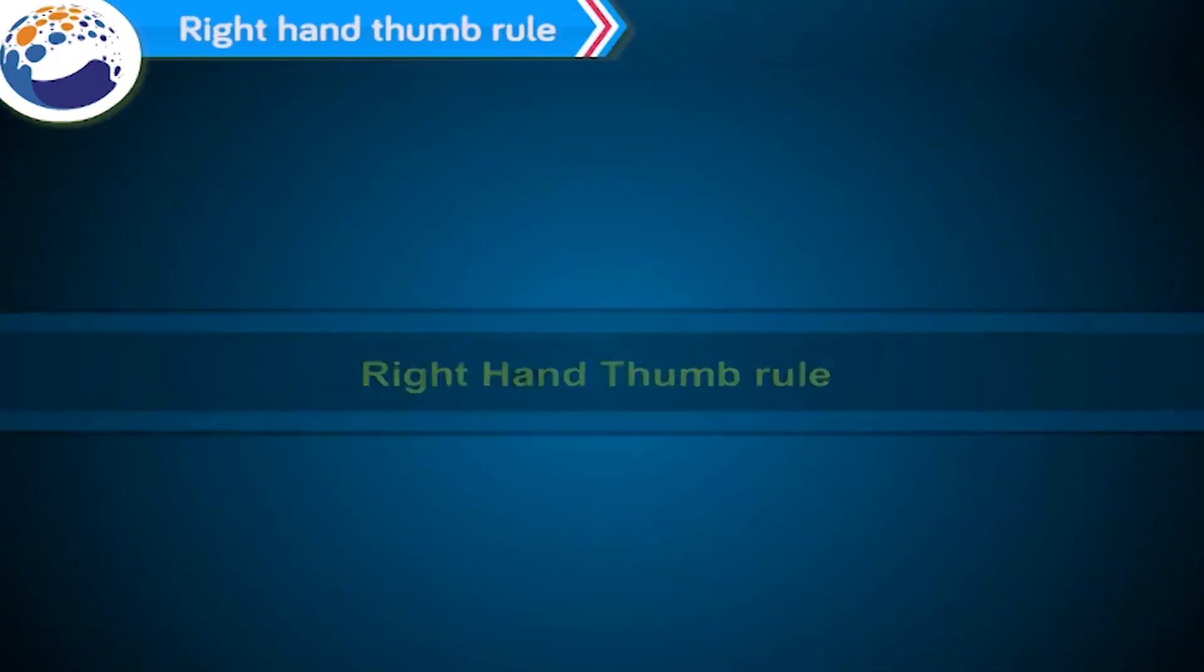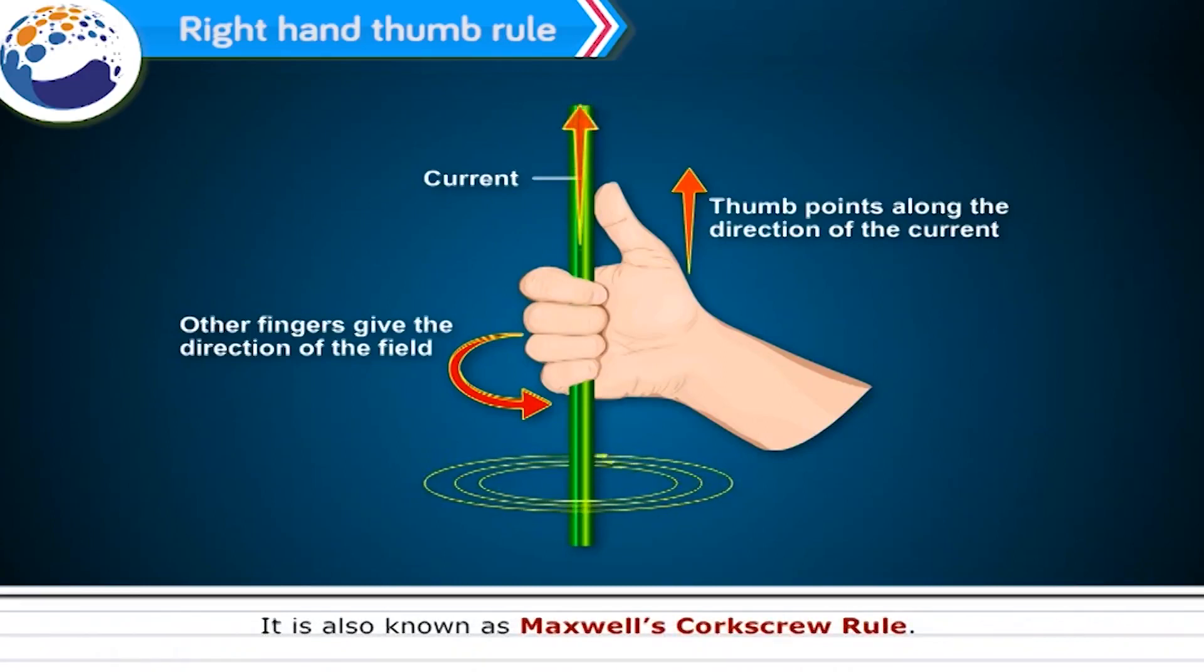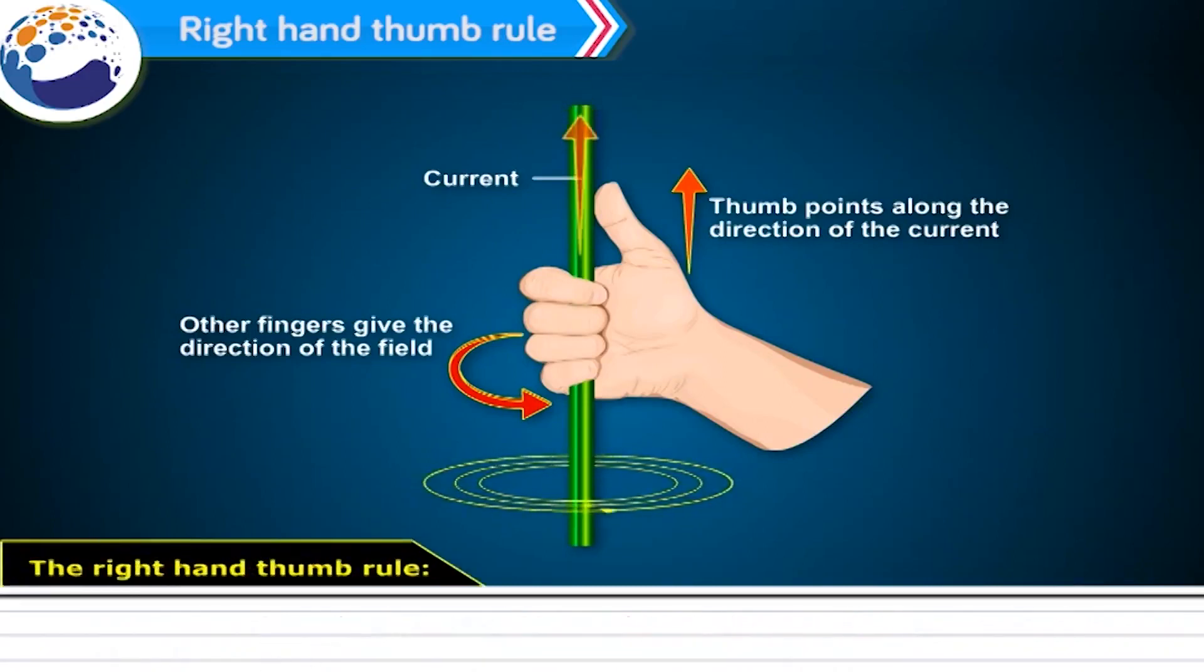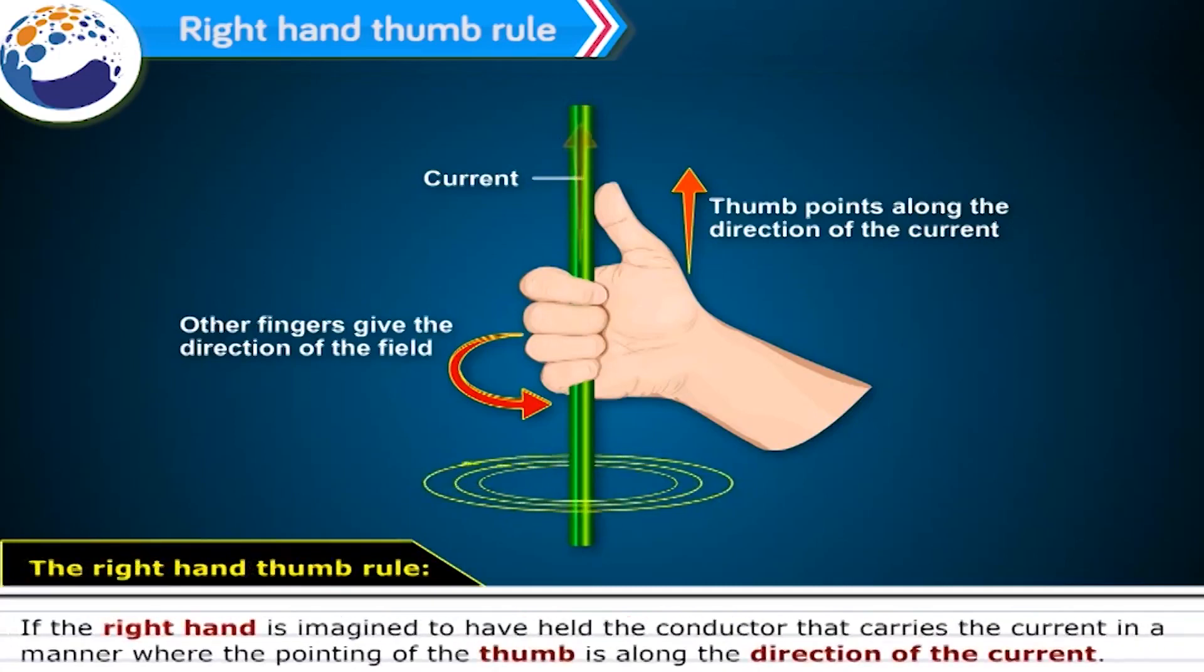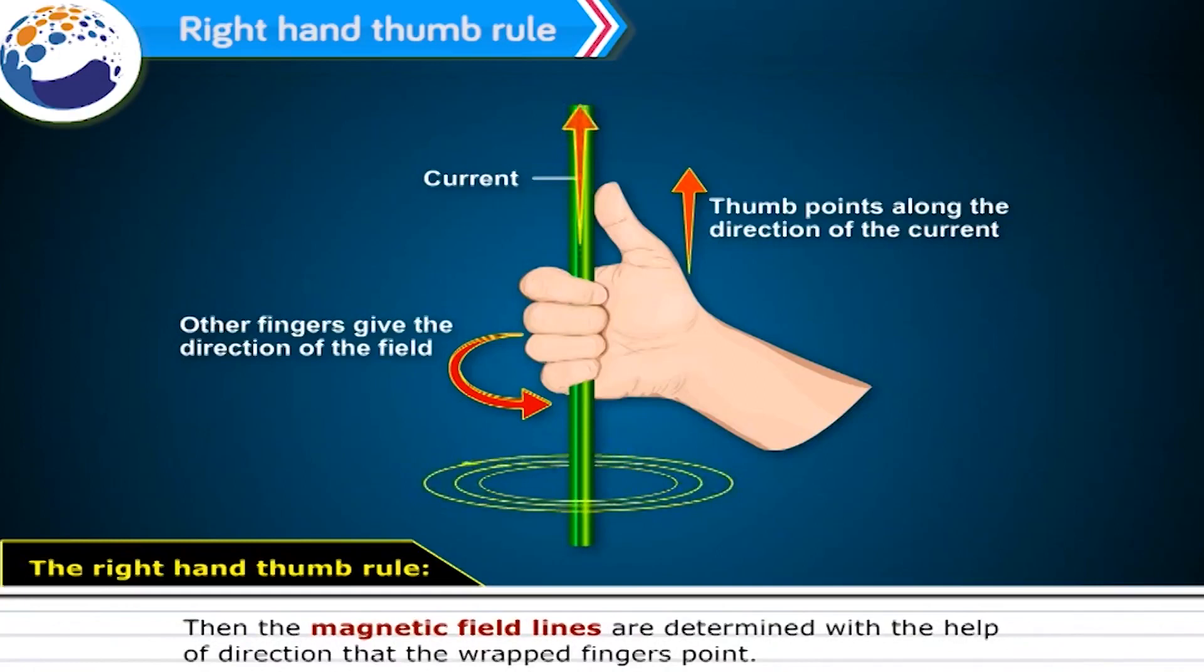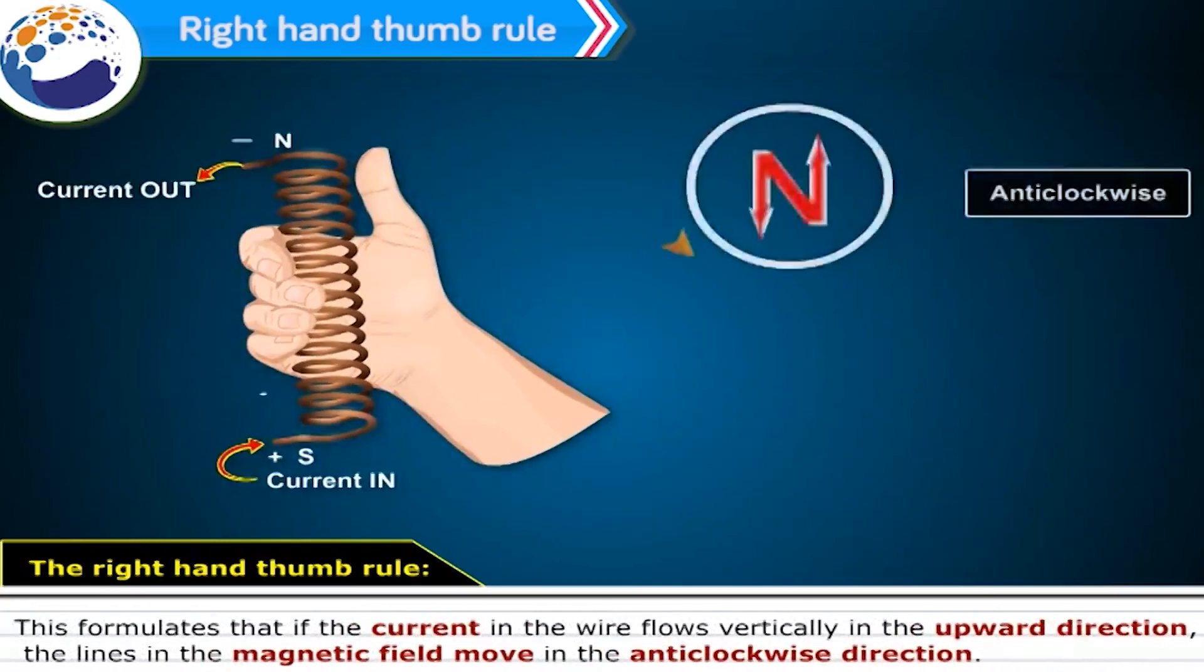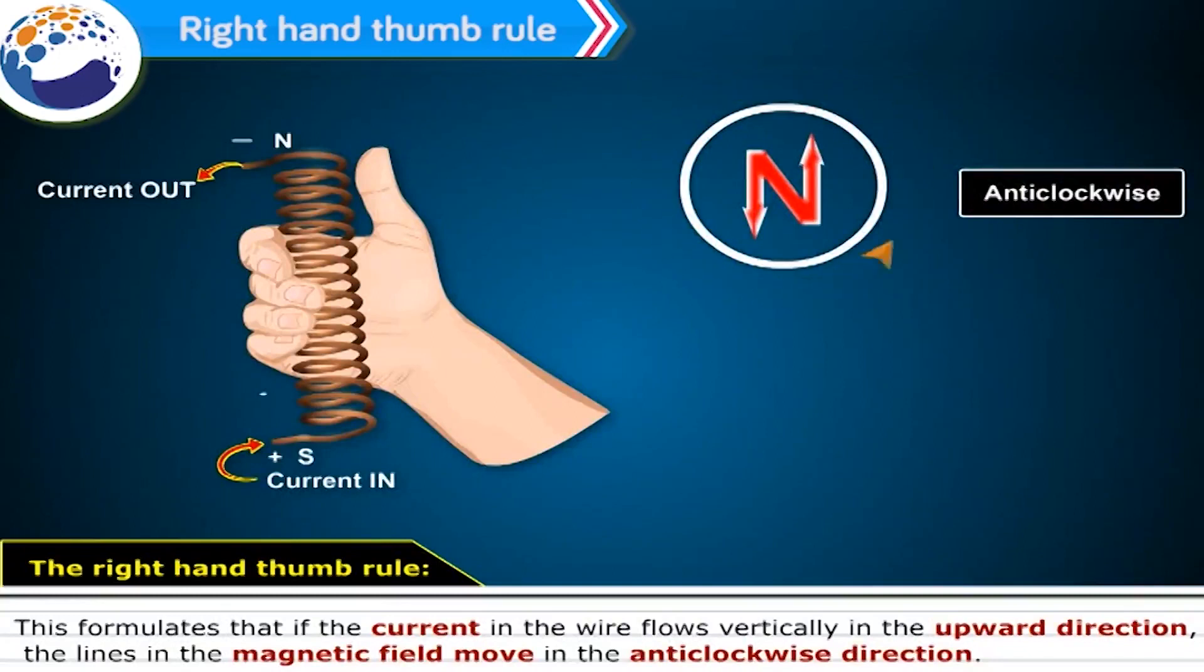Right hand thumb rule. The direction of magnetic field in relation to direction of electric current through a straight conductor can be depicted by using the right-hand thumb rule. It is also known as Maxwell's corkscrew rule. If the right hand is imagined to have held the conductor that carries the current in a manner where the pointing of the thumb is along the direction of the current, then the magnetic field lines are determined with the help of direction that the wrapped fingers point. This formulates that if the current in the wire flows vertically in the upward direction, the lines in the magnetic field move in the anticlockwise direction.